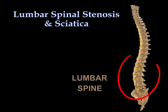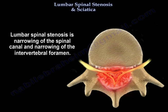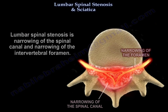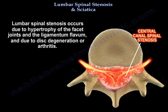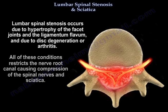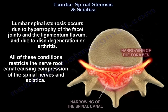Lumbar Spinal Stenosis is narrowing of the spinal canal and narrowing of the intervertebral foramen. It occurs due to hypertrophy of the facet joints and the ligamentum flavum, disc degeneration, or arthritis. All these conditions restrict the nerve root canal, causing compression of the spinal nerves and sciatica.